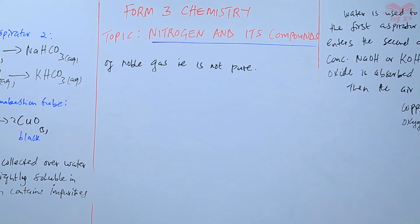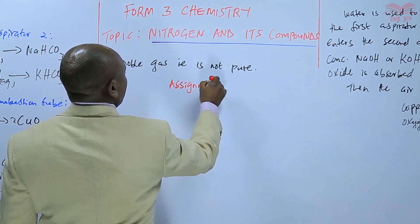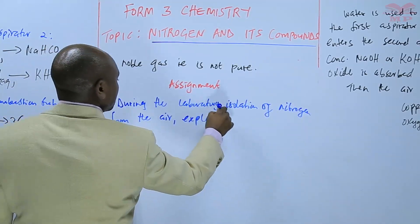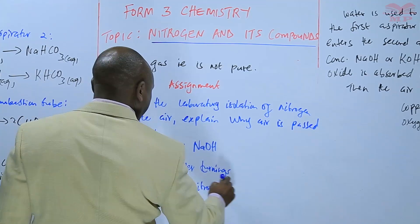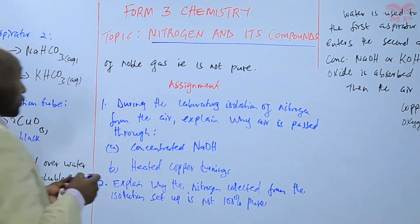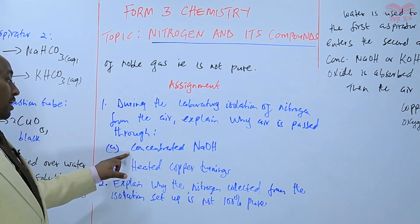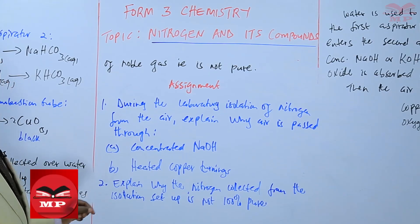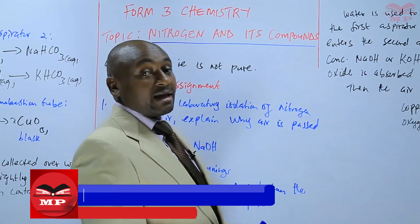That is basically about the isolation of nitrogen from the air in a small scale. Our assignment: question one — during laboratory isolation of nitrogen from the air, explain why air is passed through (a) concentrated sodium hydroxide and (b) heated copper turnings. Question two — explain why the nitrogen collected from the isolation setup is not 100% pure. We are going to stop there until next time. Goodbye.